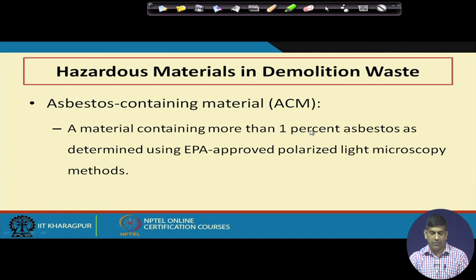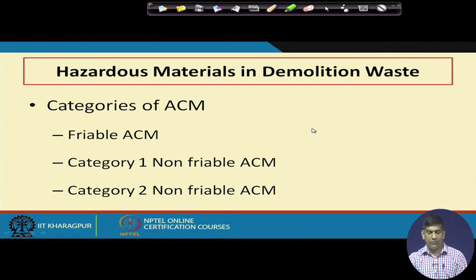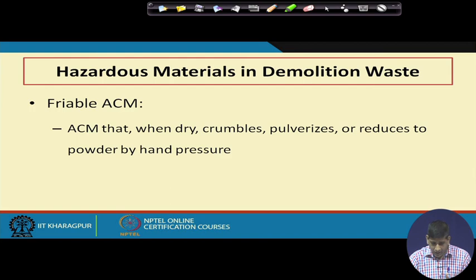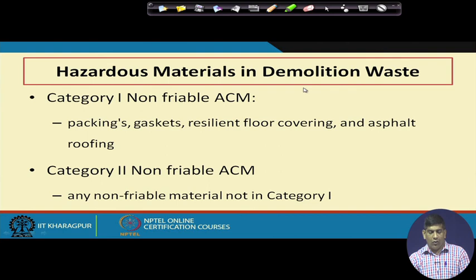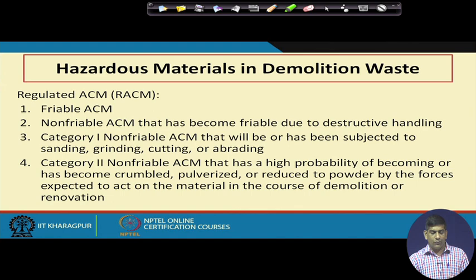Asbestos-containing material (ACM) that is dry can crumble and pulverize under hand pressure. Categories include friable ACM, Category 1 non-friable ACM (such as packing, gaskets, resilient floor covering, and asphalt roofing), and Category 2 non-friable ACM (any non-friable element not in Category 1). Non-friable ACM can also become friable due to destructive handling.